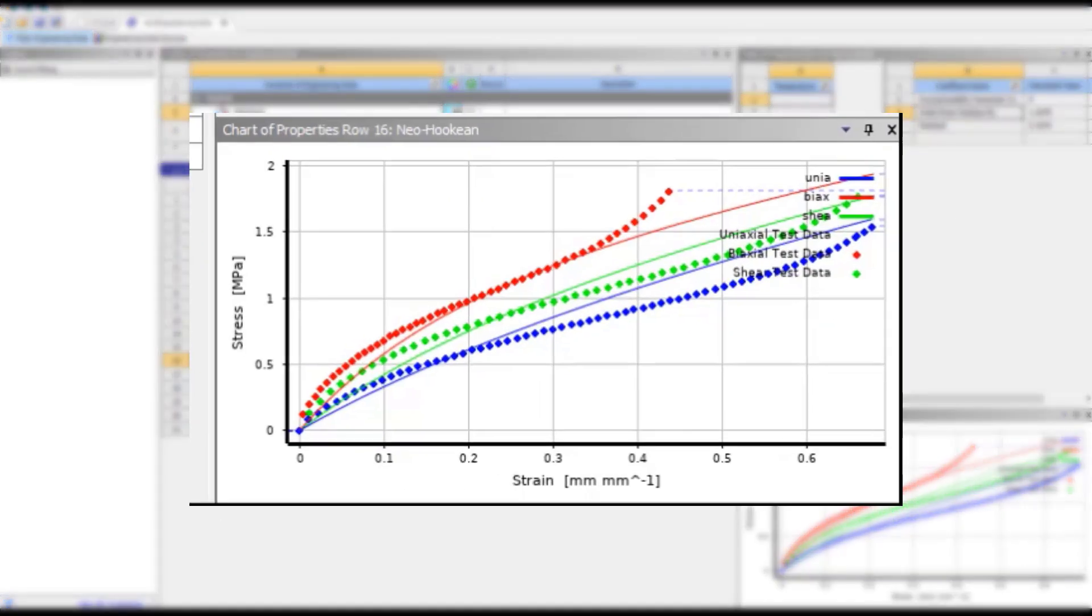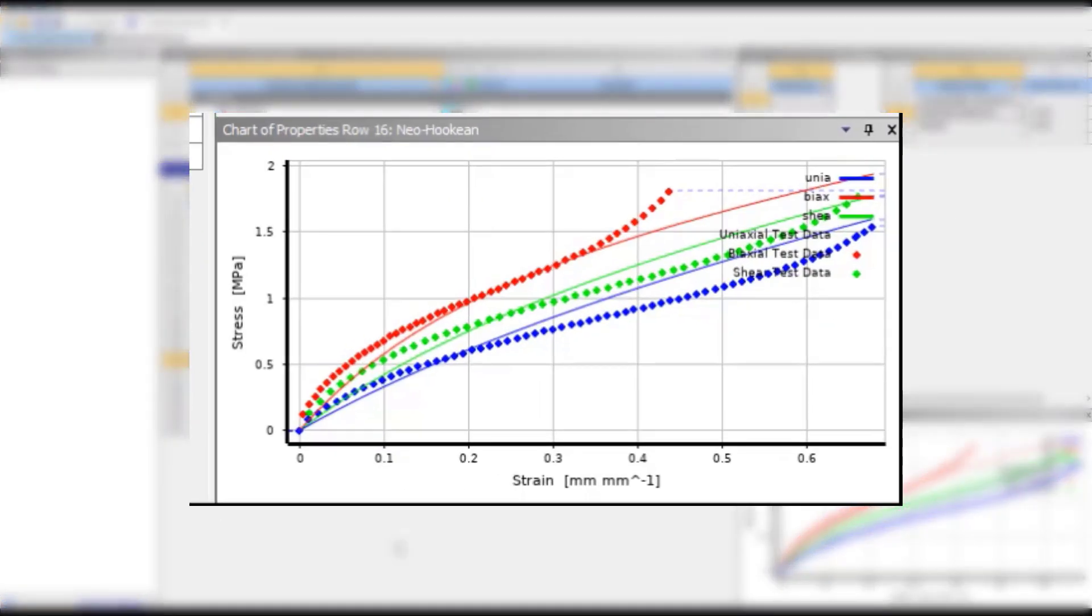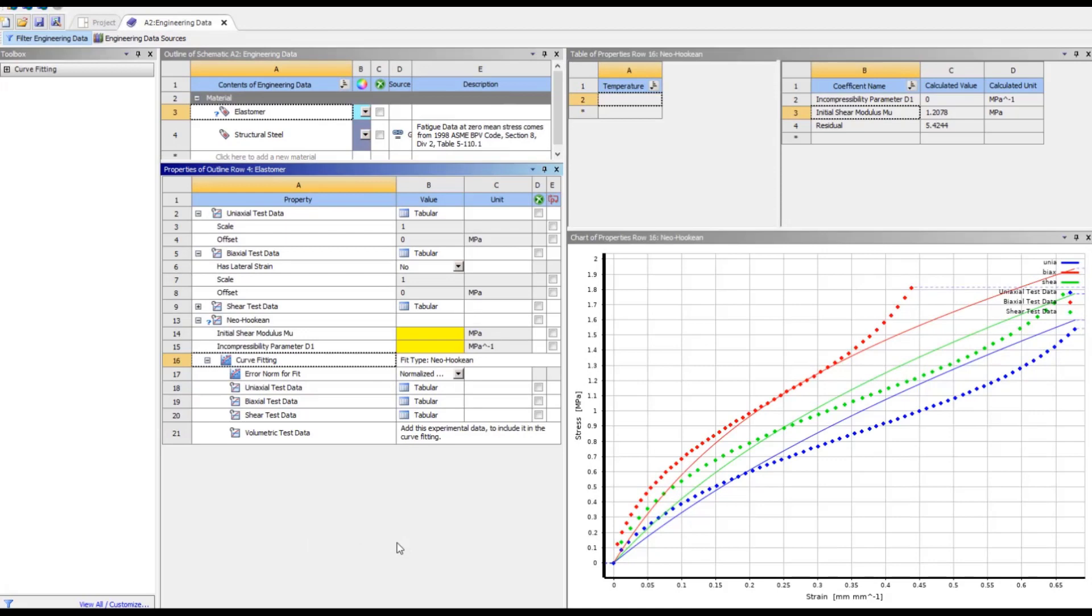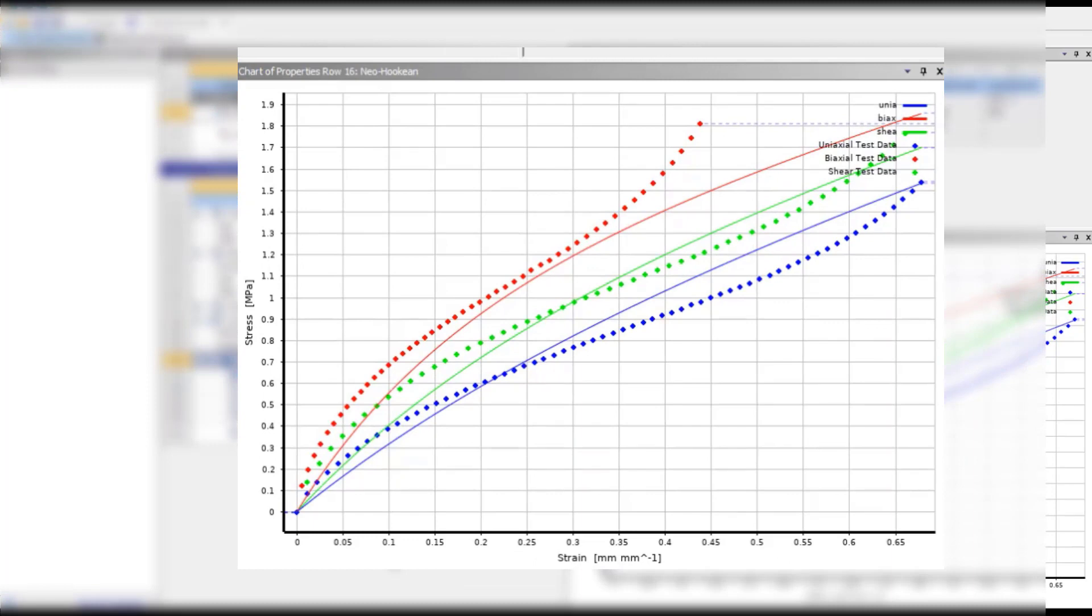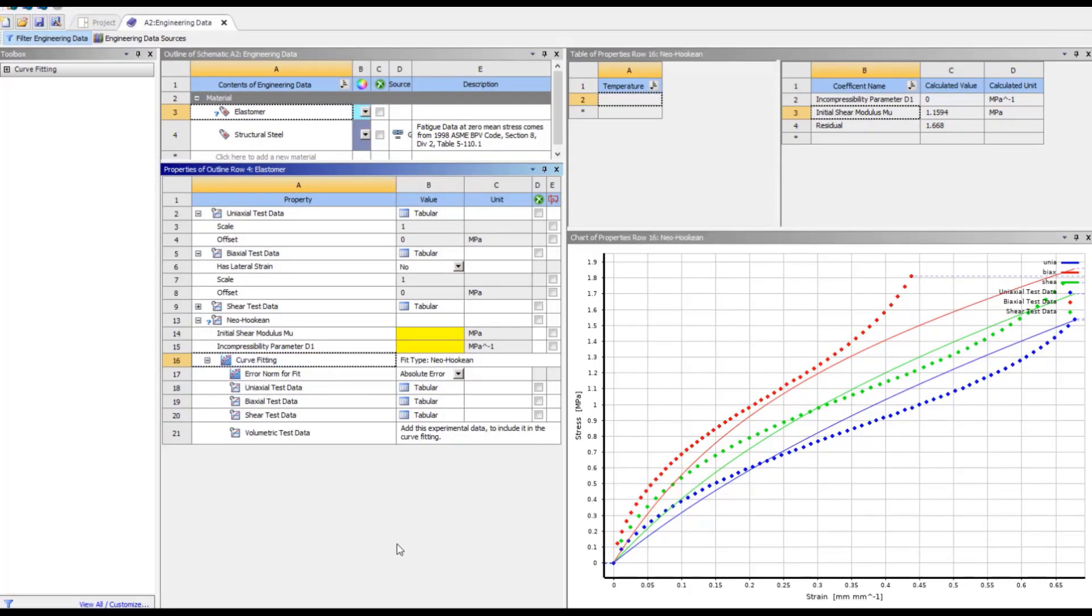Let's solve the curve fit using normalized error first. Here is the solution. We can see that it follows the data fairly well, but does not capture the shape of the curve very well. Let's change the error norm to absolute and see if that makes any difference. There's not much improvement in the quality of fit, so let's proceed to add more terms.